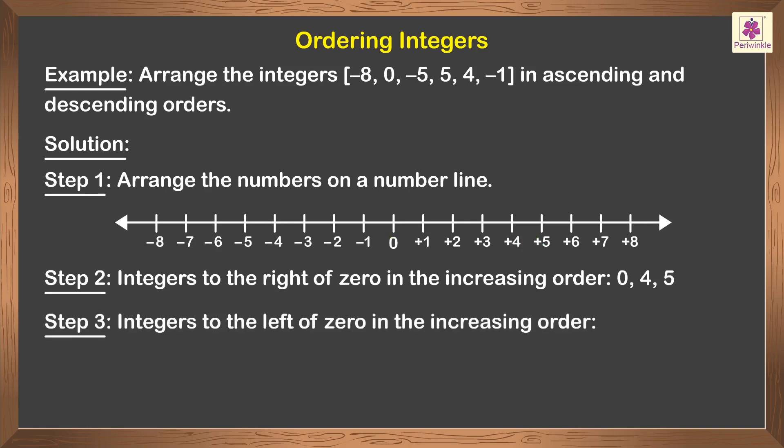Step 3: Write the integers to the left of 0 in the increasing order. So we get the order of integers as negative 8, negative 5, negative 1, and 0. The complete ascending order is negative 8, negative 5, negative 1, 0, 4, 5, and the descending order is 5, 4, 0, negative 1, negative 5, negative 8.